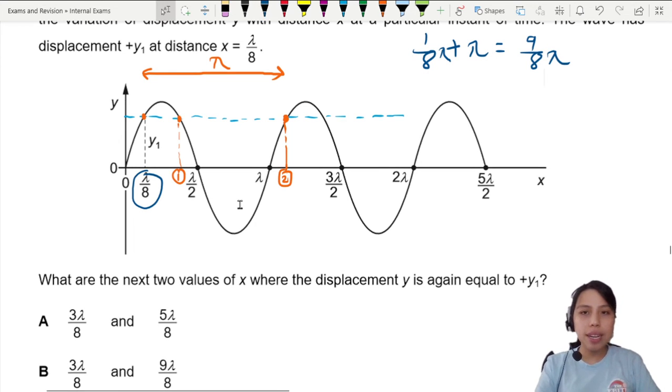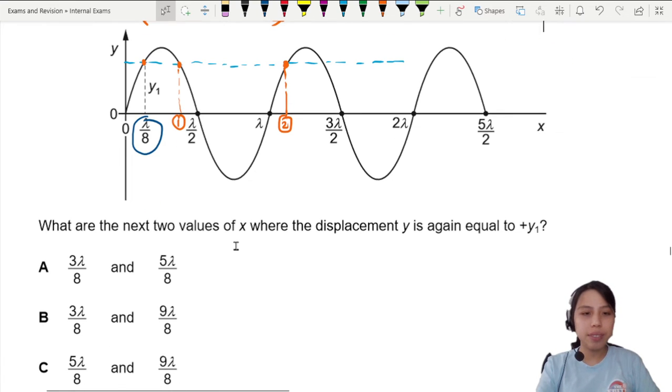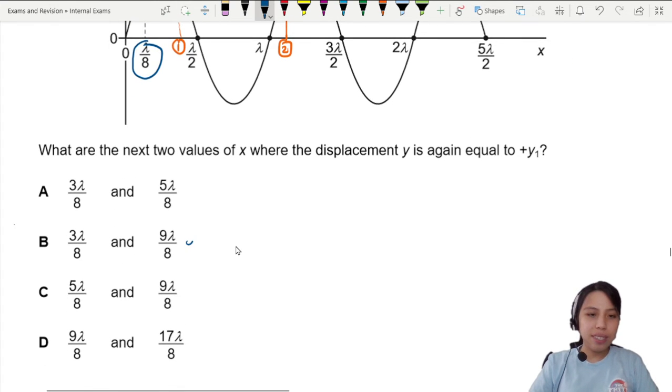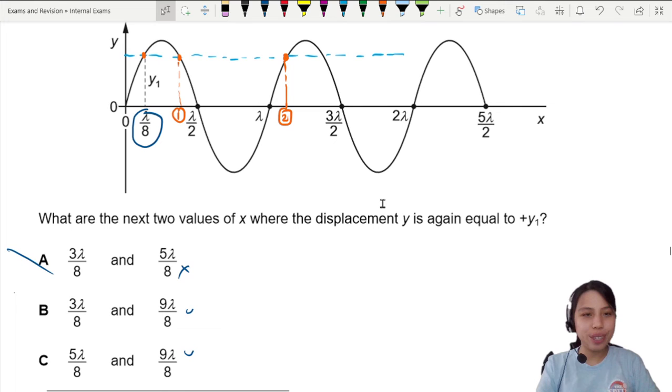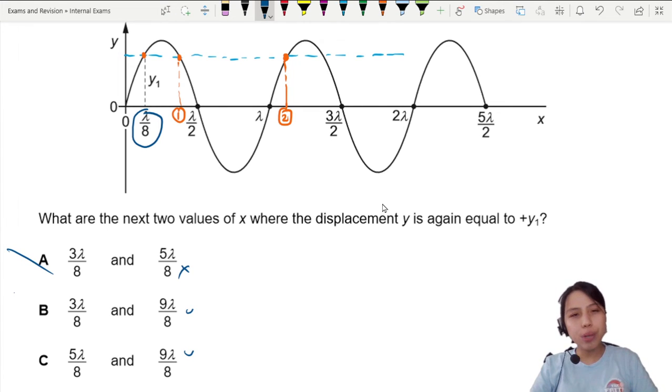So my second answer, whatever it should be, must be 9/8. So this is correct. It's wrong. The first one. How do we find the first one? It should be something in between. But what is this?